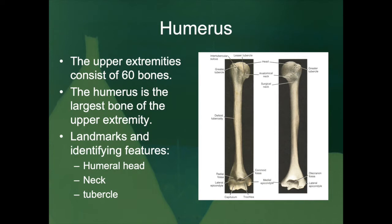As William Bass points out in his publication, the humerus ossifies from one primary center — the shaft or diaphysis of the bone — and seven secondary centers: three in the proximal or head of the bone, and four in the distal end. The three epiphyses of the proximal end coalesce about six years after birth and fuse with the shaft at about 20 years of age.